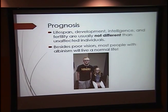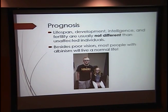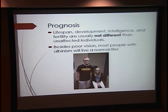In terms of prognosis, individuals with albinism are very much the same as the rest of us — they can have normal lifespan, development, intelligence, and fertility. Their biggest problem is poor vision. For example, a family seen in clinic yesterday included a 15-year-old trying to get his driver's license, on the basketball team, a 4.0 student, and his sister on the volleyball team — normal, happy individuals not really any different from the rest of us.